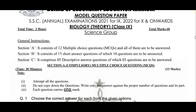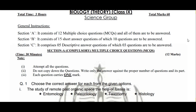Is model paper mein kuch changes ki gayi hai according to marking. Pehle 100 marks ka paper hua karta tha, then ab se reduce karke 75 marks ka paper kar diya gaya hai. Practical aur theory milakar total time 3 hours ka diya gaya hai. Theory ke liye total marks hain 60, aur in 60 marks ko three sections mein distribute kiya gaya hai. Section A mein 12 multiple choice questions hain.